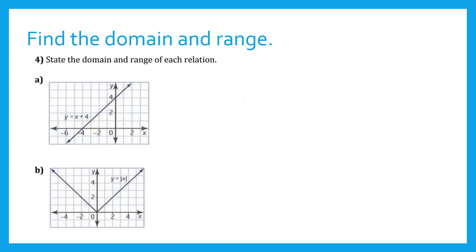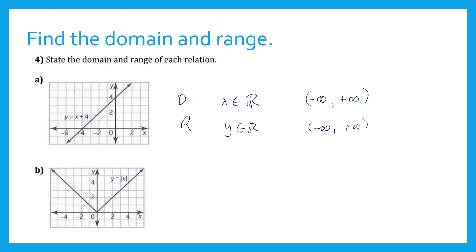Let's review finding domain and range. For this function, letter A, the graph is here. We can say that the domain of this function, x is an element of real numbers — from negative infinity to positive infinity. For the range of this function, y is an element of real numbers, all real, so it's from negative infinity to positive infinity.